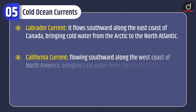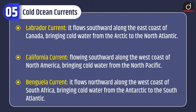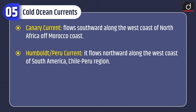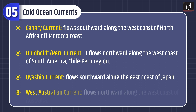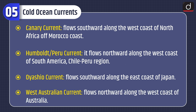Cold ocean currents include: the Labrador Current, flowing southward along the east coast of Canada bringing cold water from the Arctic to the North Atlantic; the California Current, flowing southward along the west coast of North America bringing cold water from the North Pacific; the Benguela Current, flowing northward along the west coast of South Africa bringing cold water from the Antarctic; the Canary Current, flowing southward along the west coast of North Africa off the Morocco coast; the Humboldt or Peru Current, flowing northward along the west coast of South America in the Chile-Peru region; the Oyashio Current, flowing southward along the east coast of Japan; and the West Australian Current, flowing northward along the west coast of Australia.